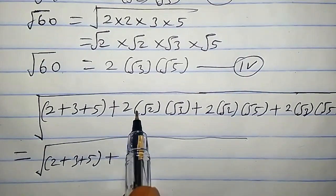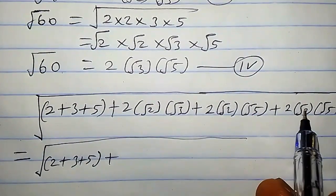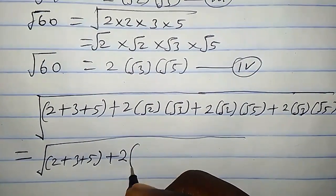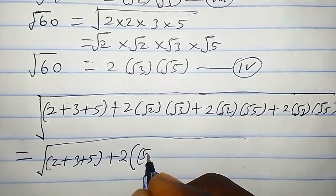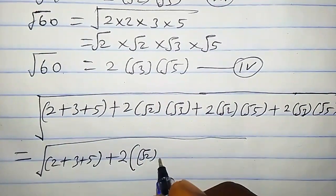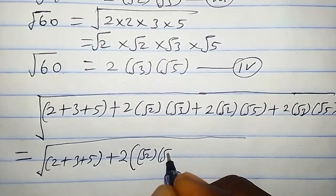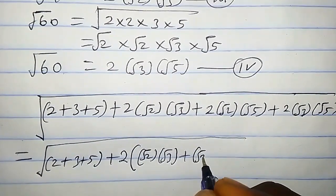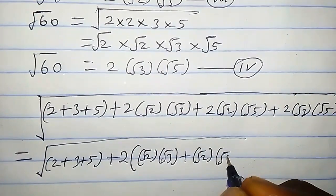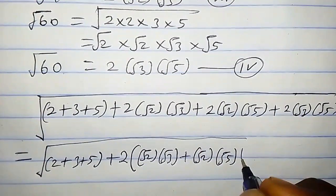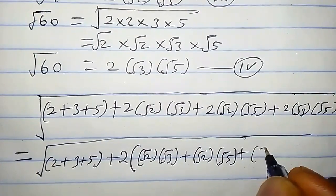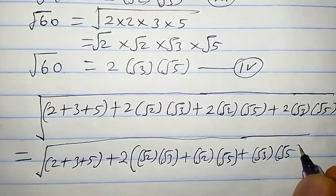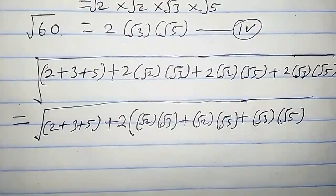We observe that 2 is common in each of these terms, so we factor it out. We have 2 times (√2·√3 plus √2·√5 plus √3·√5).